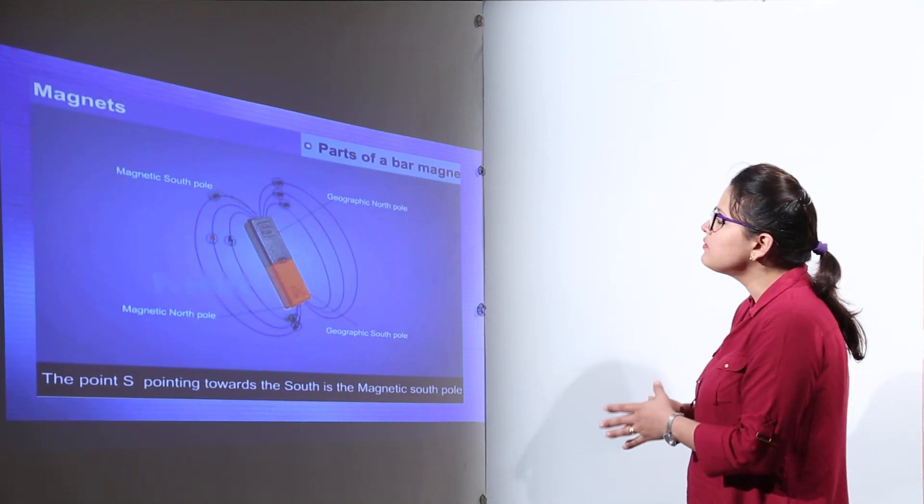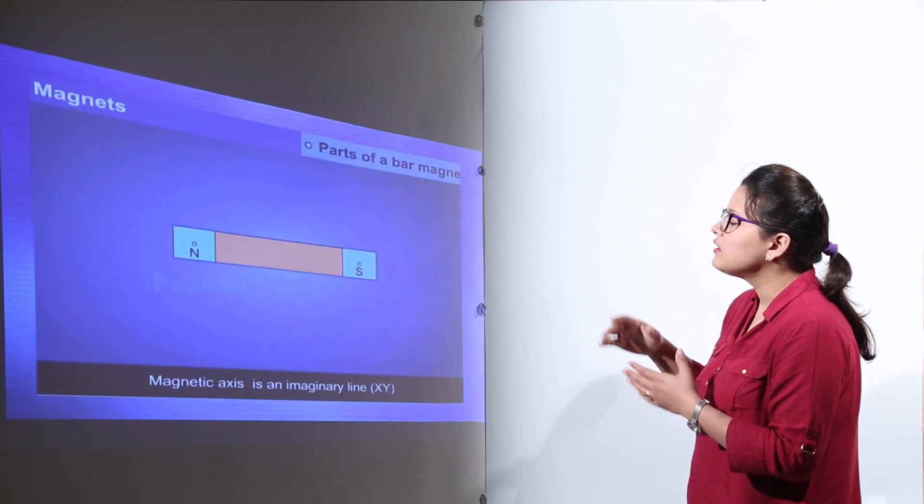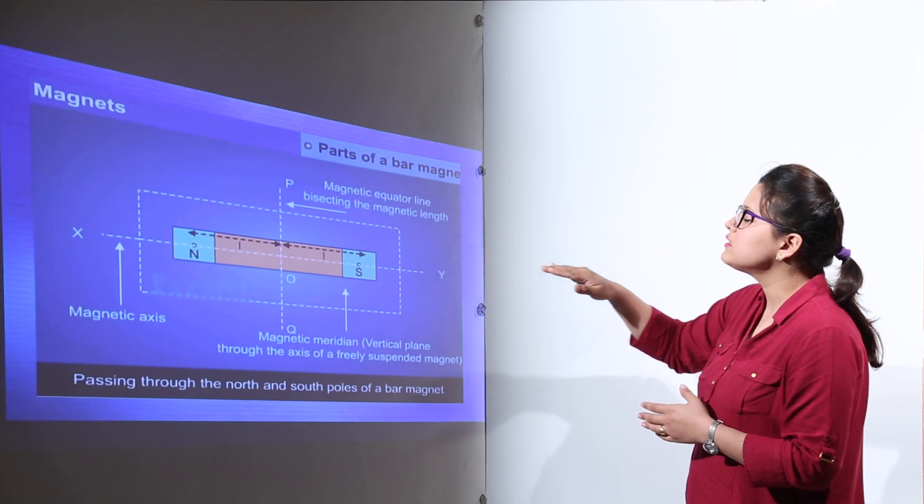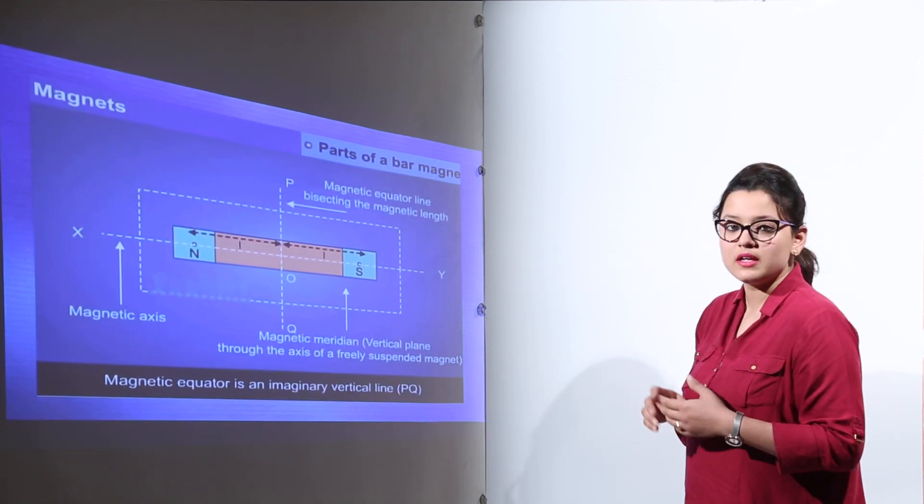Next we have the magnetic axis. The magnetic axis is an imaginary line. You can see that it will be passing through the magnet. The line XY is showing the magnetic axis.